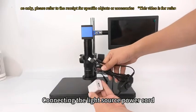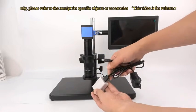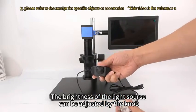Connecting the light source power cord. The brightness of the light source can be adjusted by the knob.